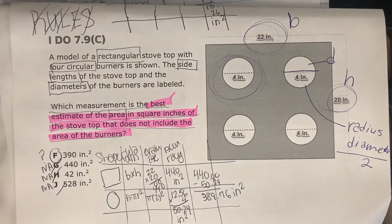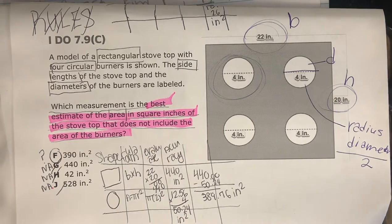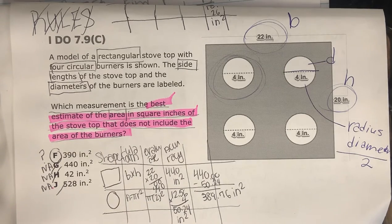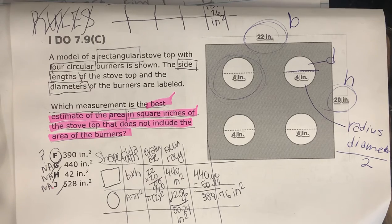Alright, so I do 7.9C. A model of a rectangular stove top with four circular burners is shown. The side lengths of the stove top and the diameters of the burners are labeled. Which measurement is the best estimate of the area in square inches of the stove top that does not include the area of the burners?